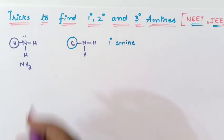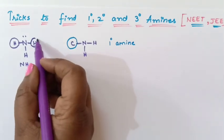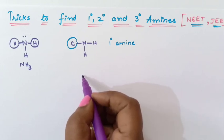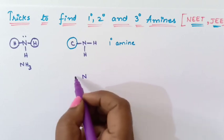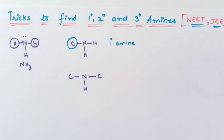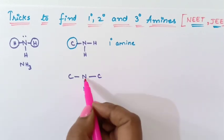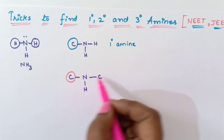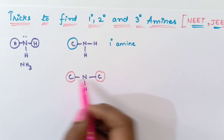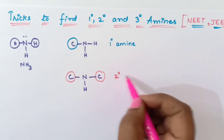Suppose if I replace 2 hydrogens with 2 carbons. So here I will write nitrogen, carbon, carbon, hydrogen. So here you can see nitrogen is connected to 2 carbons. 1 carbon, 2 carbon. If nitrogen is connected with 2 carbons it is called as secondary amine.